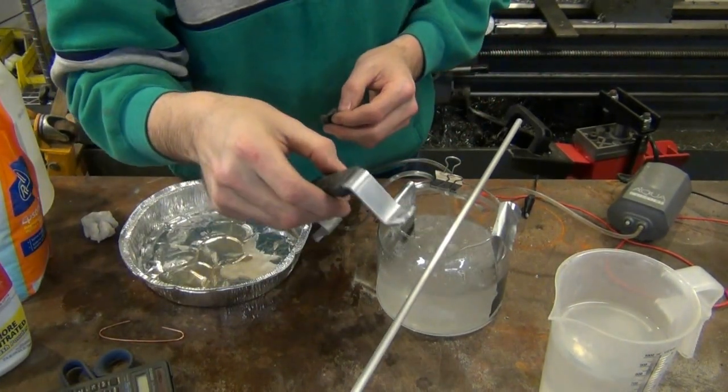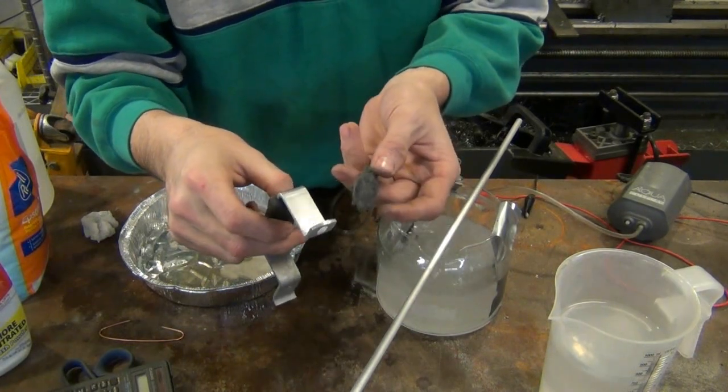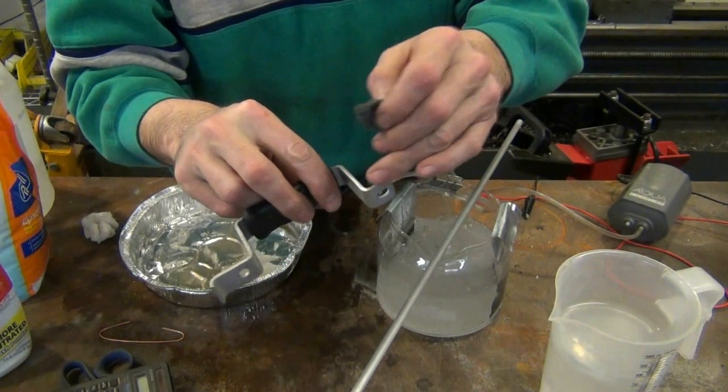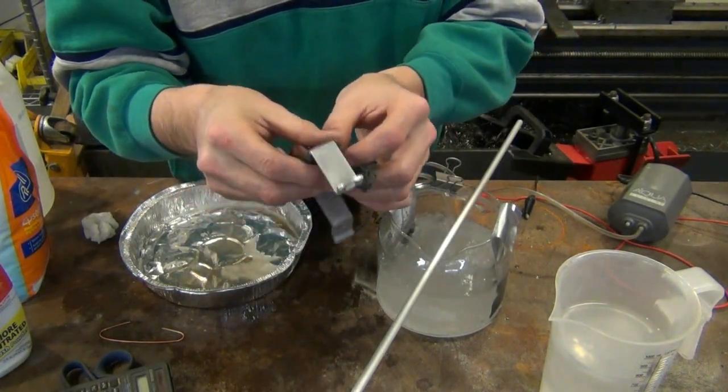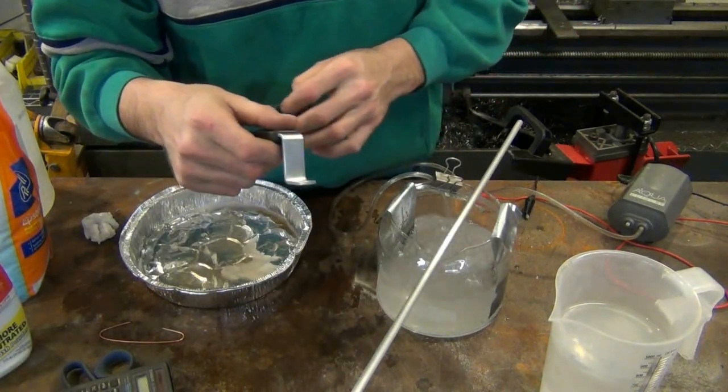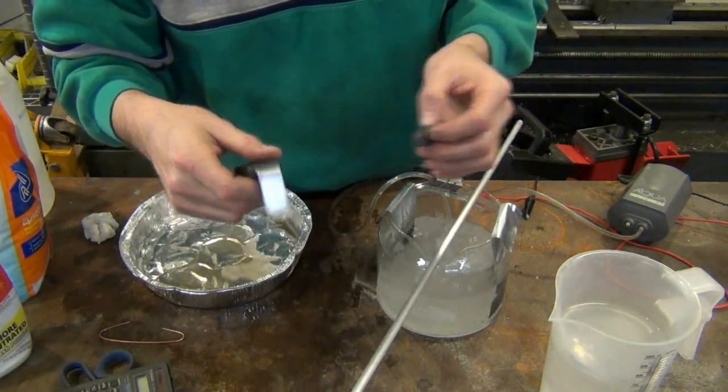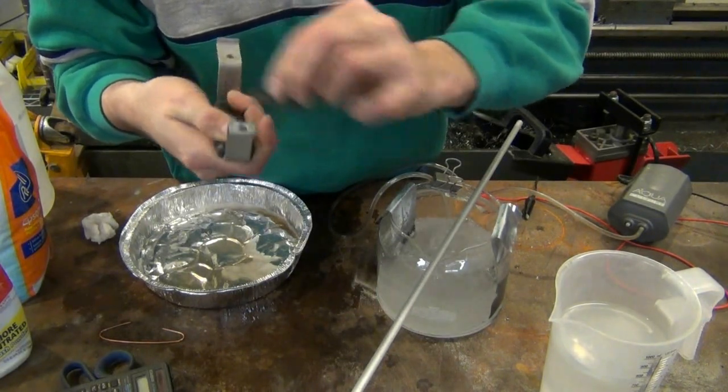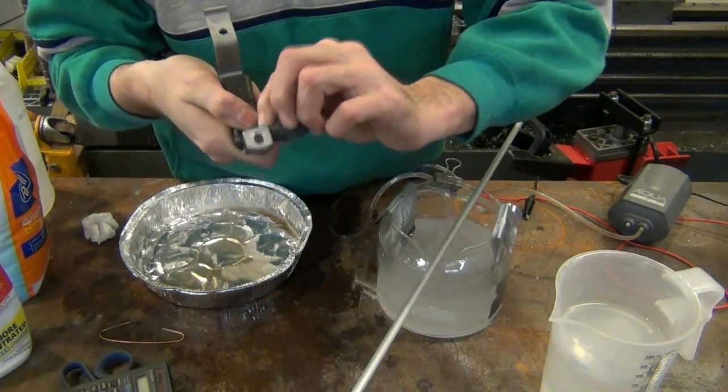I went ahead and hit that with a piece of fine steel wool to clean that up. Turned out pretty nice. It was getting a little dark around the edges. That happens sometimes. I'm not certain why. I think maybe it has to do with it getting too close to the anodes maybe. But once I hit it with steel wool it looks really nice. Shined right up.